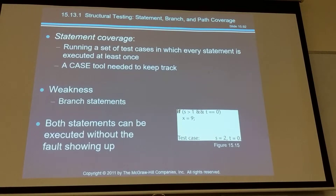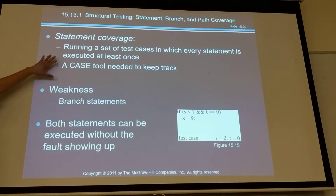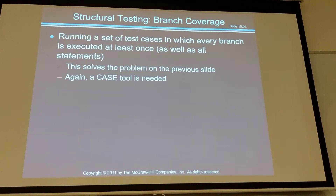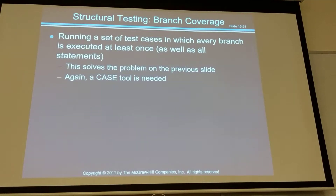If you use JUnit or a testing environment, they will actually generate a report for you - how many statements you have covered. It will also generate so-called branch coverage: how many branches you have covered. Branch coverage can mean different things to different people. For instance, it can mean how many branches I hit, or how many branches I have taken - there's a difference. If I have gone to a branch statement, do I need to go to both branches, or am I required to hit both branches?